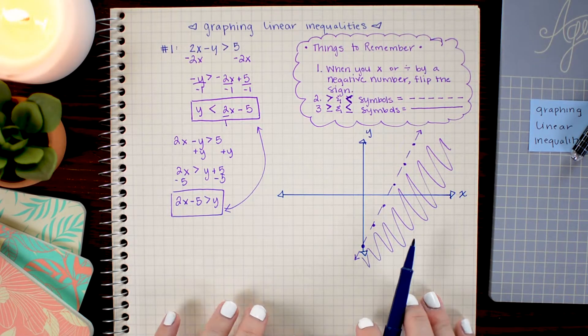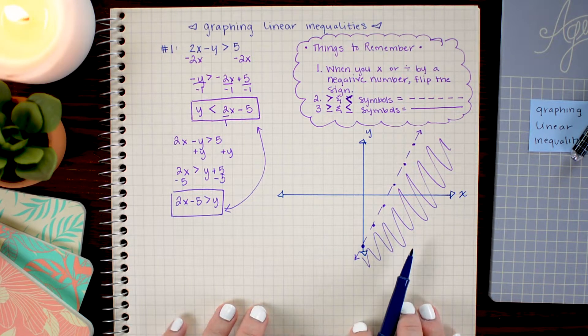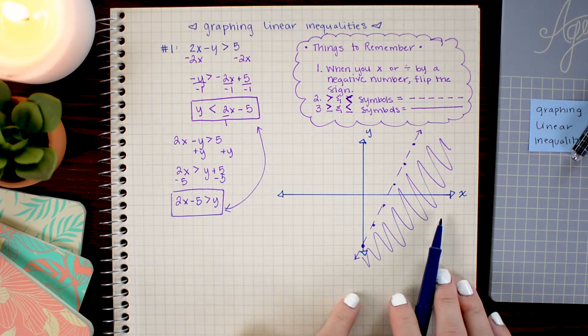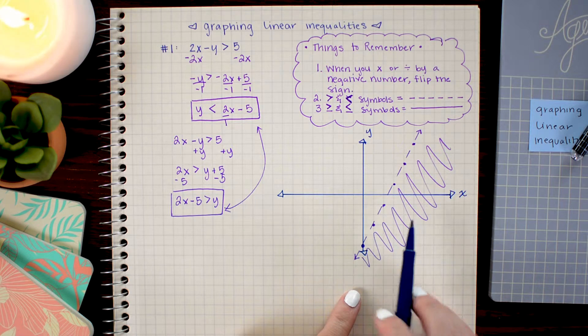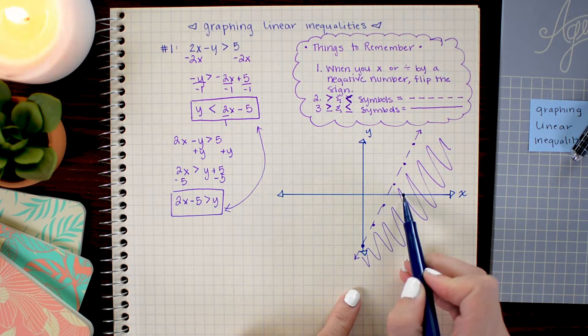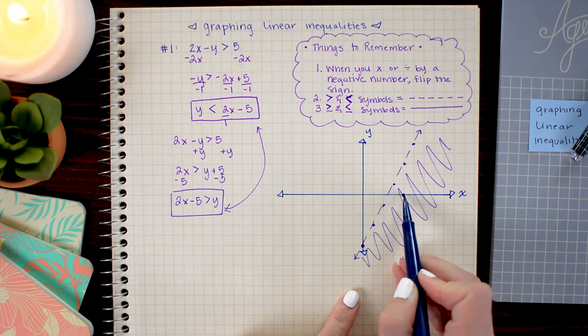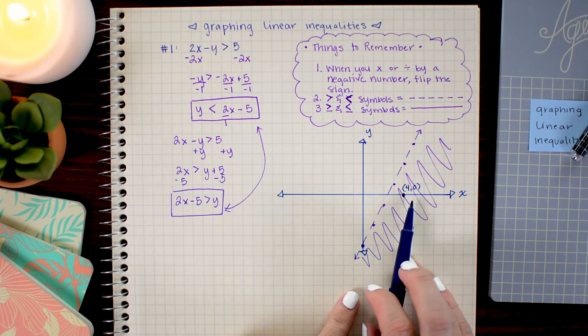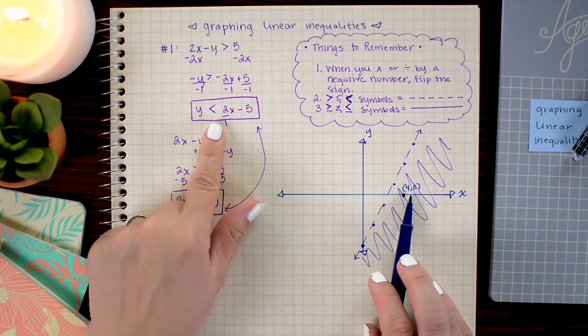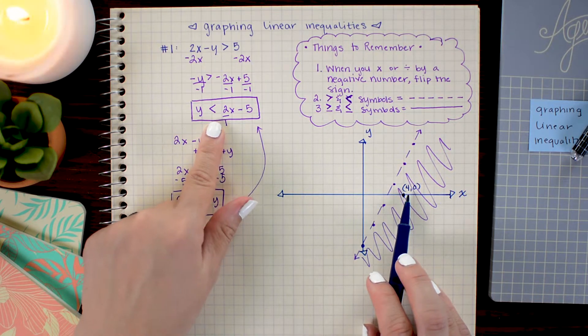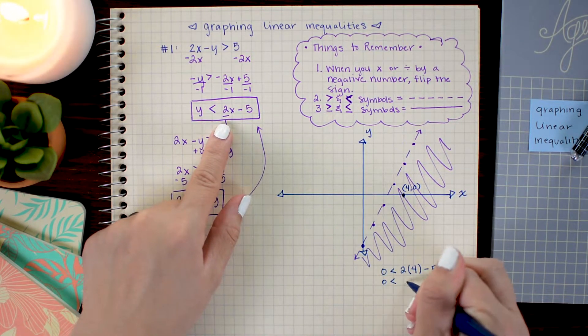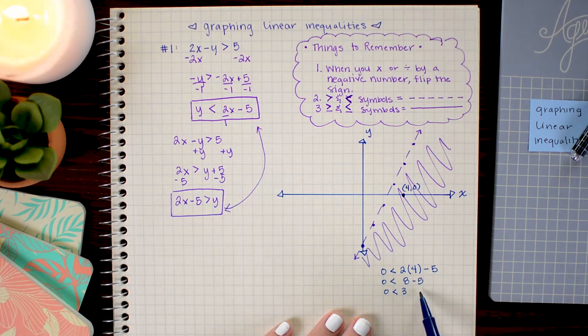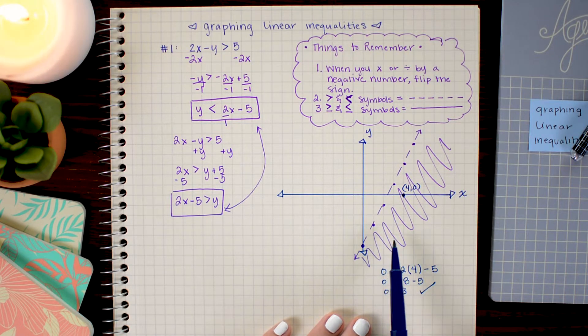If you're a little unsure of whether you shaded the correct portion, what you can do is test a point. So I'm going to choose a point in the shaded region. Let's just go for something nice and easy. So how about this point here on the x axis? Looks like it's 1, 2, 3, 4 over and 0 up. So this is the point 4, 0. I'm just going to plug in those coordinates for x and y into our equation and see if the statement holds. And when I do that, I get 0 is less than 3. Because that is a true statement, I know that I have shaded the correct region.